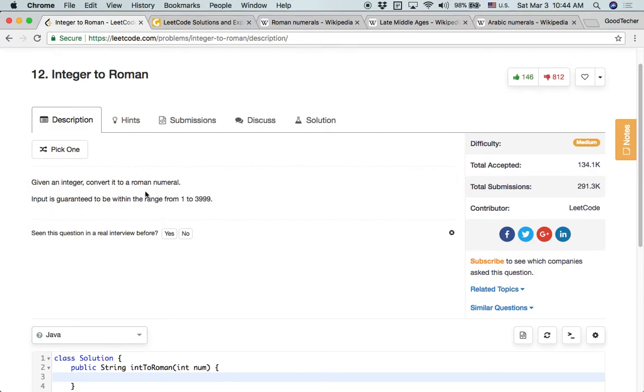We see here this coding problem description is very short. It's basically about converting an Arabic numeral to Roman numerals. To solve this coding problem, we need to get some knowledge about what is the Roman numeral.